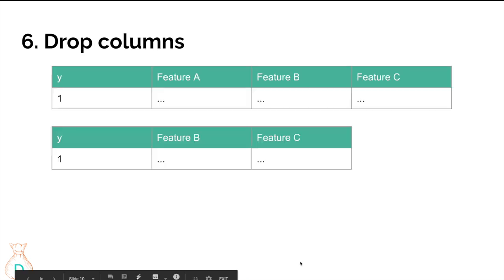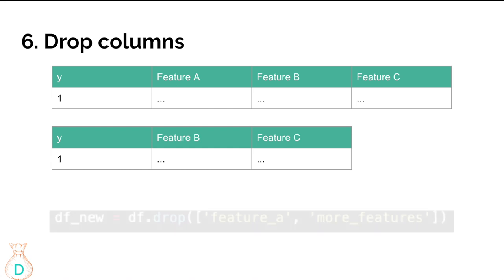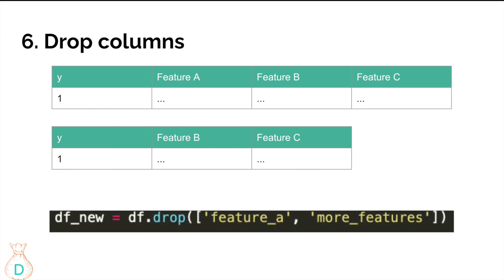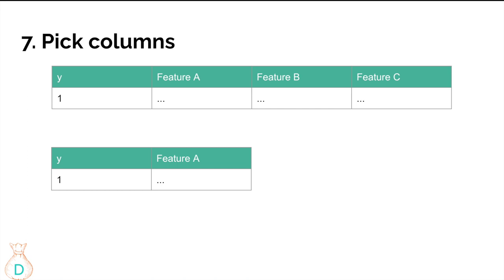After checking correlation, you might find some features are super highly correlated and shouldn't both be included. The general rule of thumb is that a correlation of 0.3 or above is a bit high and you may need to consider dropping those features. For example, if feature A is highly correlated with feature B, I'd drop feature A using: df_new = df.drop(['feature_a'], axis=1). You can drop more features by adding more column names separated by commas.